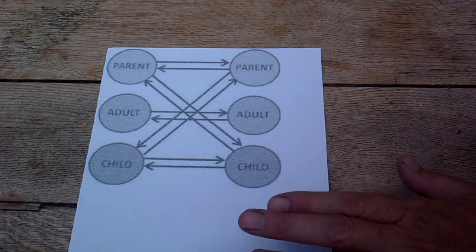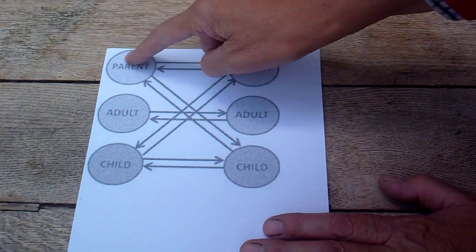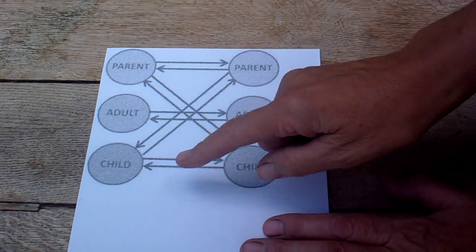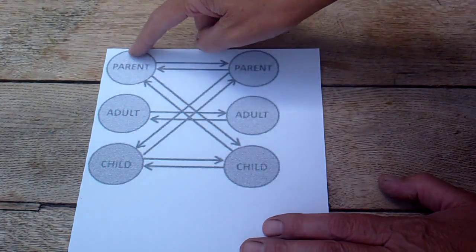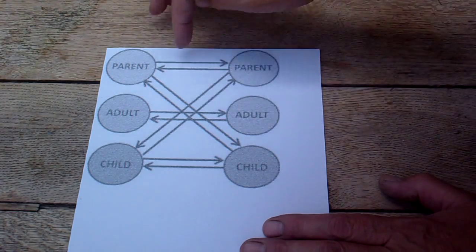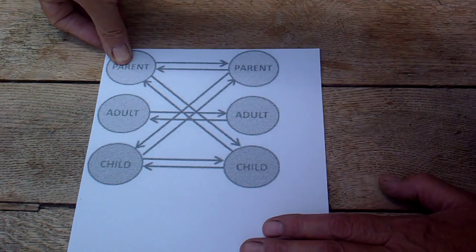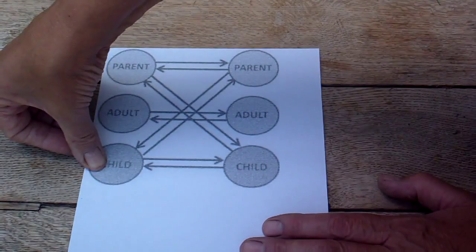So, imagine that these are two people. That's one person, and that's another person. And each of the two people have three parts to their thinking. They can be thinking like a parent, they can be thinking like an adult, and they can be thinking like a child.